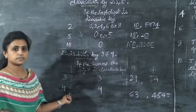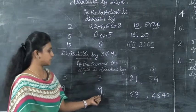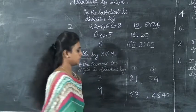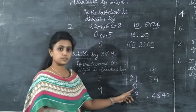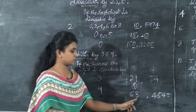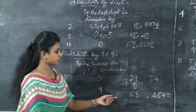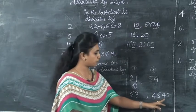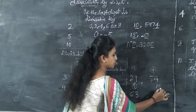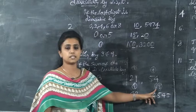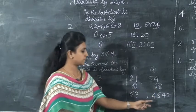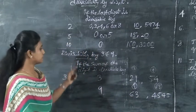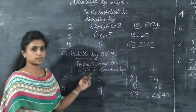Now, for 9: a number is divisible by 9 if the sum of its digits is divisible by 9. For example, 63: 6 plus 3 is 9, and 9 is divisible by 9, so 63 is divisible by 9. Next, 4545: 4 plus 5 is 9, and 4 plus 5 is 9, so 9 plus 9 is 18. The sum of digits, 18, is divisible by 9, so 4545 is divisible by 9. This is the second divisibility rule — for 3 and 9, check the sum of the digits.